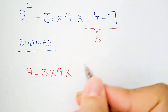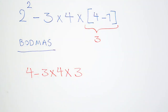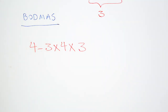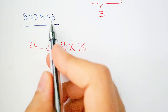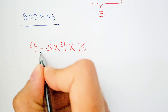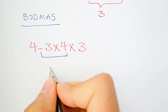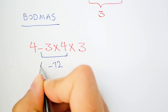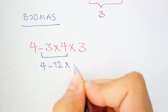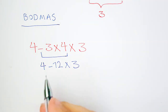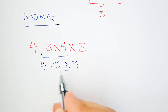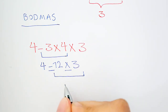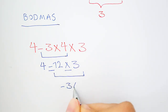In the new expression we have subtraction and multiplication. Multiplication has higher priority than subtraction, so first we do the multiplication: negative 3 times 4 equals negative 12. In the new expression we again have subtraction and multiplication, so we do the multiplication: negative 12 times 3 equals negative 36.